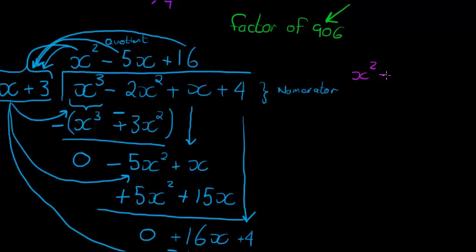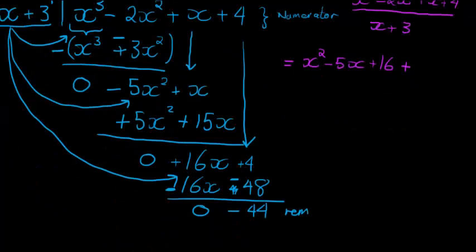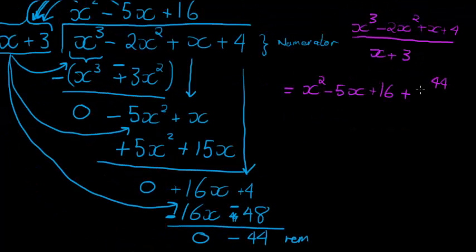x² minus, no, x³, I'm sorry, x³ - 2x² + x + 4. If that is divided with x + 3, then my answer that I get in the end is this quotient, x² - 5x + 16 plus, there's still another 44 as a remainder that needs to be divided by x + 3. But it cannot divide nicely, so we keep it as a fraction.